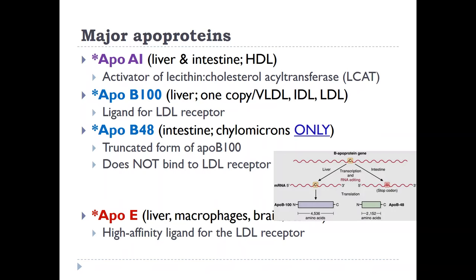ApoA1 is synthesized in the liver and intestine, and it is an integral protein for HDL. It is a strong activator of lecithin cholesterol acyltransferase, which we will be talking about a little bit later.